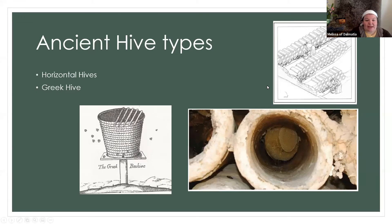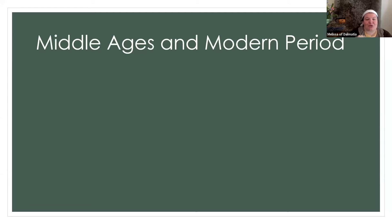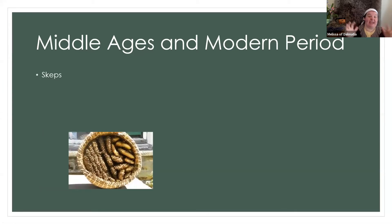Moving to the Middle Ages and modern period: we have skeps — that traditional basket beehive that everybody recognizes. One of the earliest pieces of evidence of skeps was found in a bog in Lower Saxony, Germany, dated to the first century AD. They were used exclusively throughout Europe from the Middle Ages until about the 19th century, with their own methods for colony maintenance and honey extraction. Their use usually resulted in the destruction of the colony.